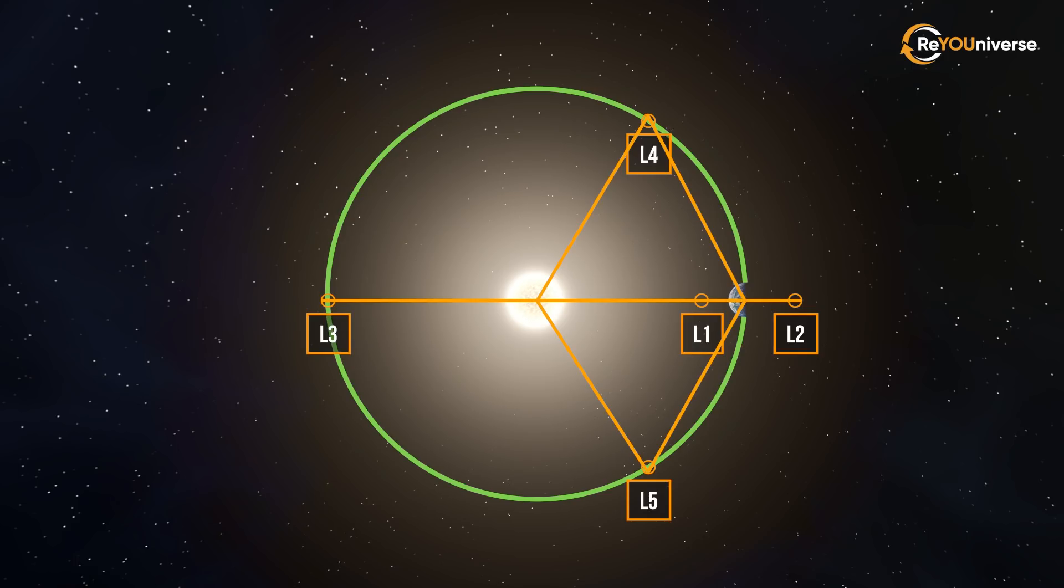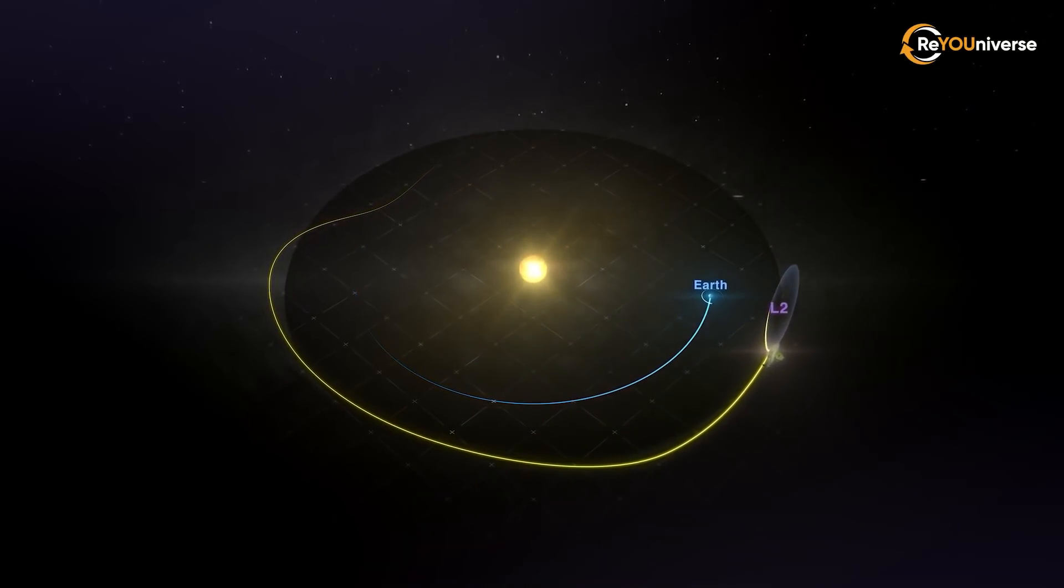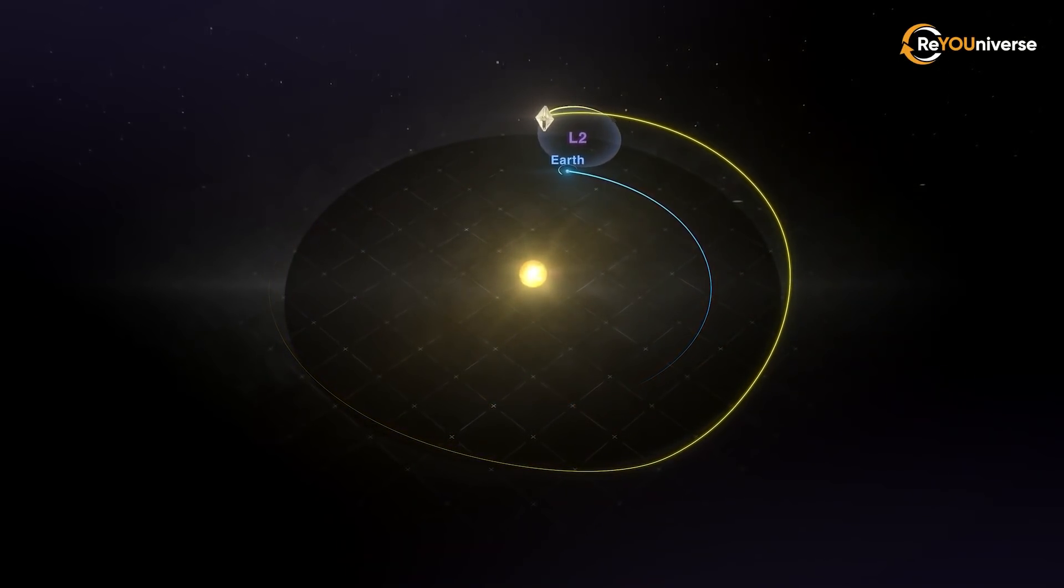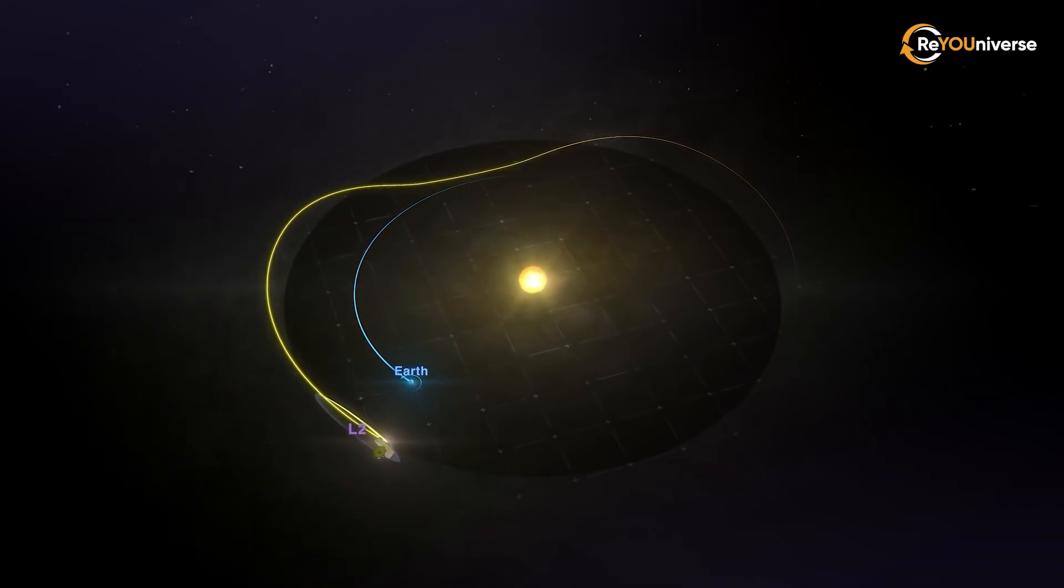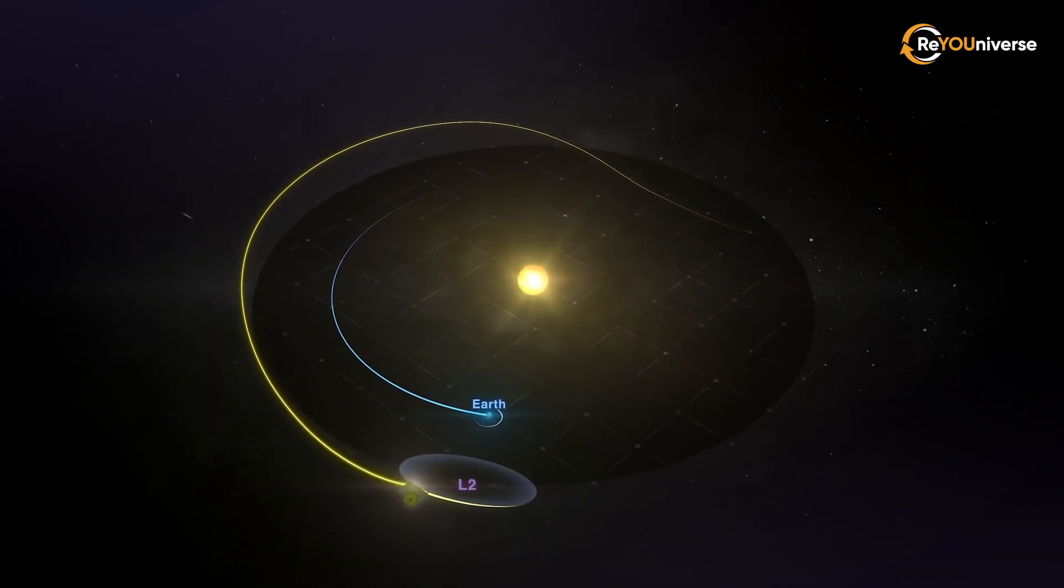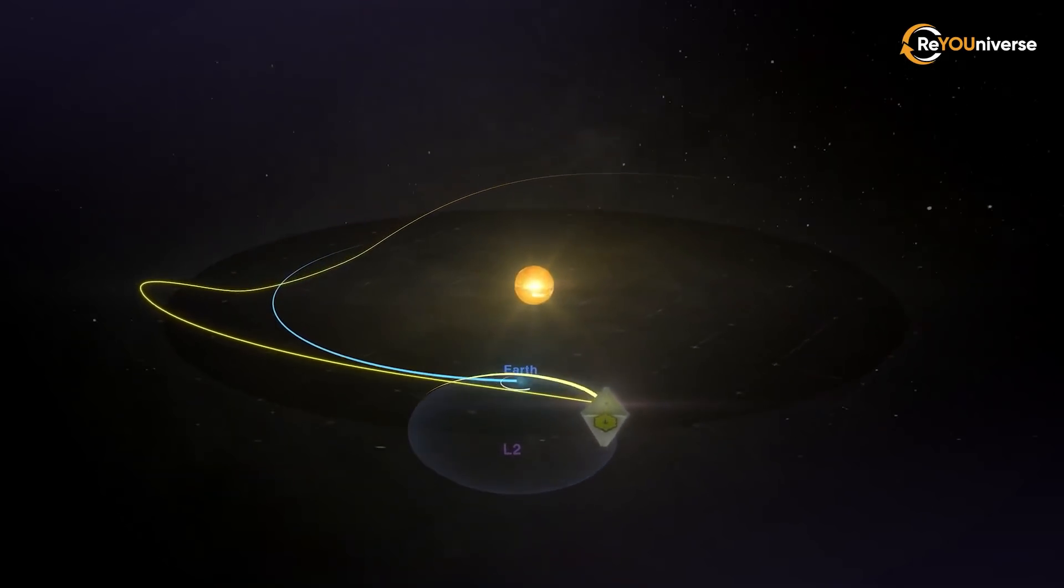Webb will head to one of these points, namely L2. This means that unlike Hubble, the new telescope won't orbit the Earth, or even hover in geostationary orbit. Instead, Webb will orbit the Sun in sync with our planets.